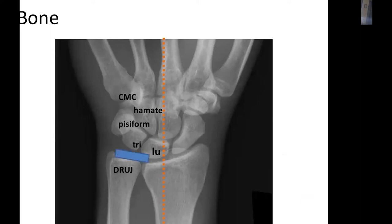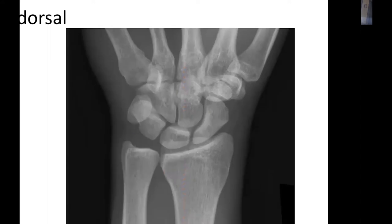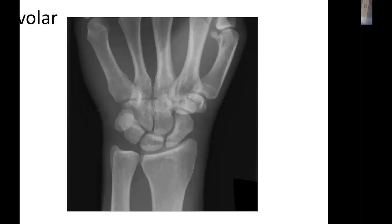Soft tissue problems can also cause ulnar-side rest pain, including pathology in the TFCC, the lunotriquetral ligament, and the midcarpal ligament leading to midcarpal instability. On the dorsal side, outside the joint, there is the ECU tendon and the dorsal branch of the ulnar nerve. On the volar side, there is the FCU tendon, Guyon's canal, and the ulnar nerve.